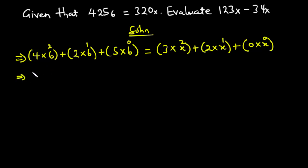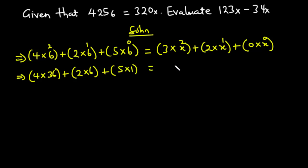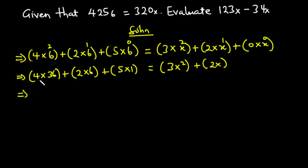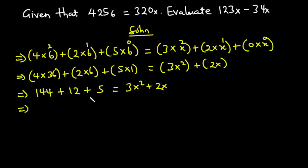Now let's simplify. 6 squared is 36, so we have 4 times 36, plus 2 times 6, plus 5 times 1 — since any number raised to the power 0 is 1. On the right side we have 3x squared, plus 2x, plus 0 times 1 which is 0. So 4 times 36 is 144, plus 2 times 6 is 12, plus 5 times 1 is 5. That equals 3x squared plus 2x.